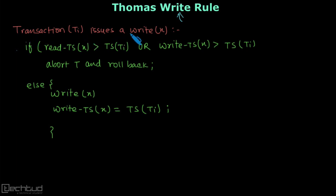If transaction Ti issues a write(X), then we compare whether the read timestamp of X is greater than timestamp of this transaction itself, or write timestamp is greater than transaction itself. If any one of these is true, then we abort because from this we can be sure that a later transaction than this Ti has accessed the value.